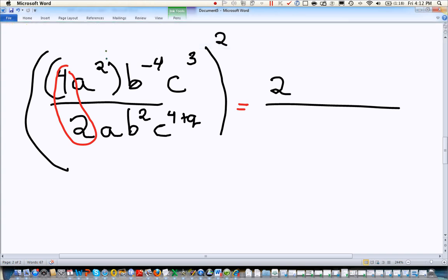Then I'm going to move on and deal with the letter A. Now when we're dealing with fractions, we do subtract the exponents. There's 2 on the top, there's a 1 on the bottom. So that means 2 minus 1 is A to the 1.